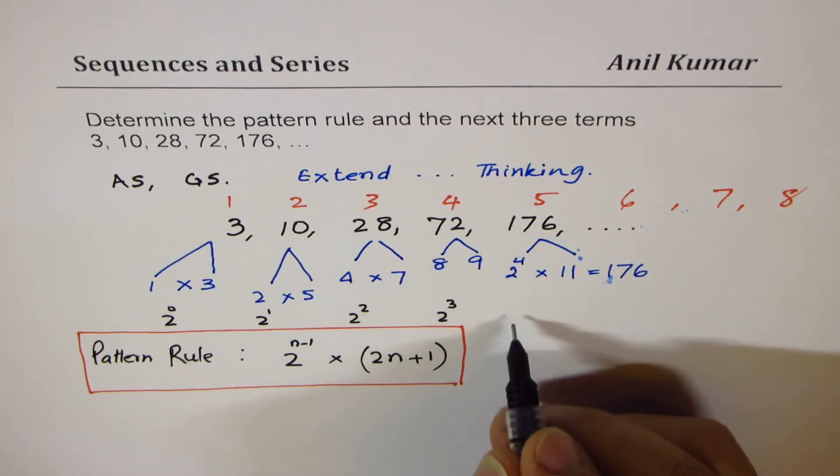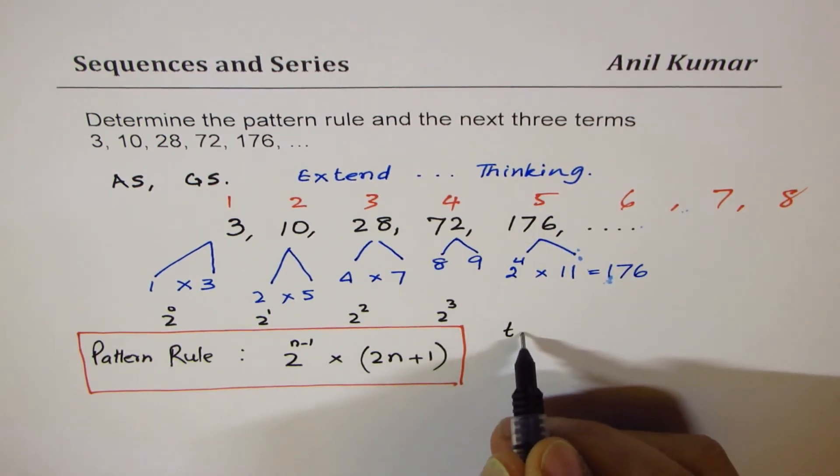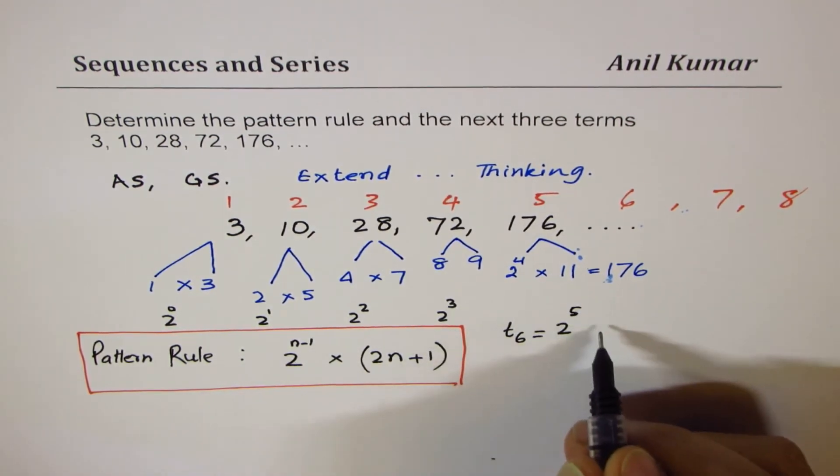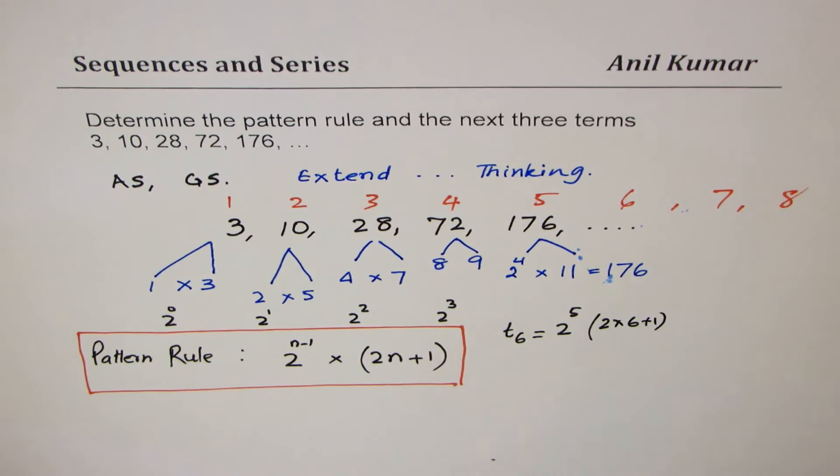So term number 6, let me write down here, t6, will be 2 to the power of, let me write 5 here, times 6, we have to write. So 2 times 6 plus 1. Let's calculate.